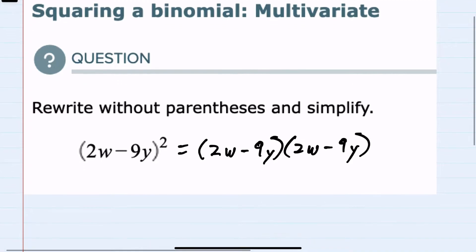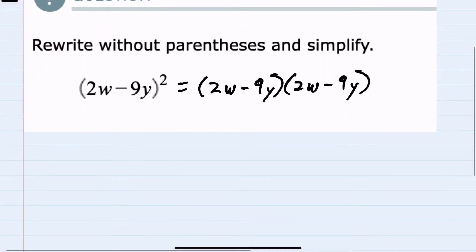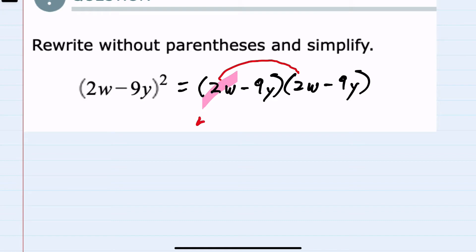From here to simplify, I'll be doing the multiplication. I will start by taking the first term, the 2w, and multiplying the first term in the second expression. 2w times 2w would give me a 4 for 2 times 2, and w times w is w squared. So 2w times 2w is 4w squared.